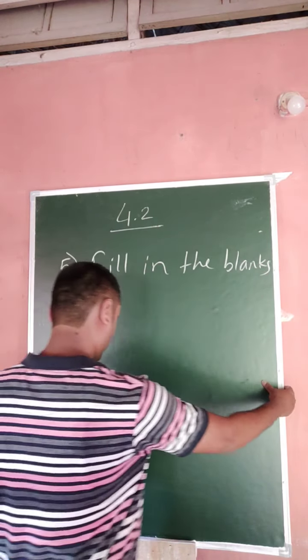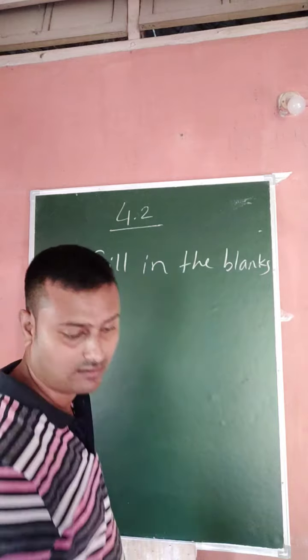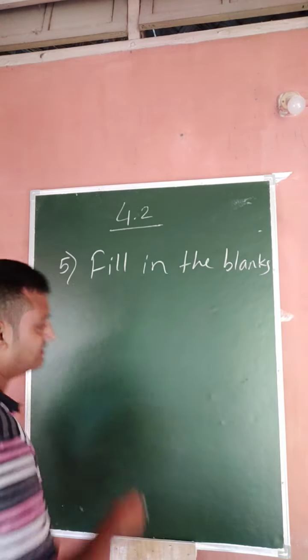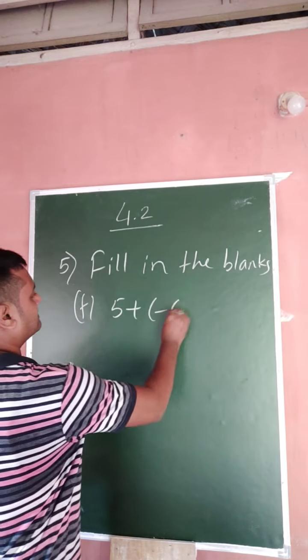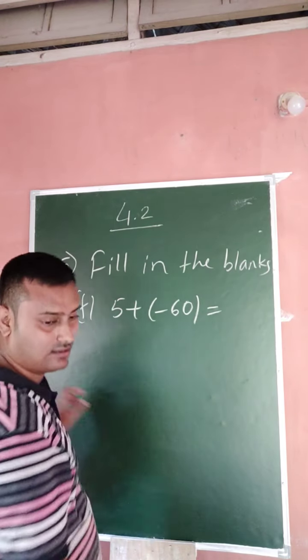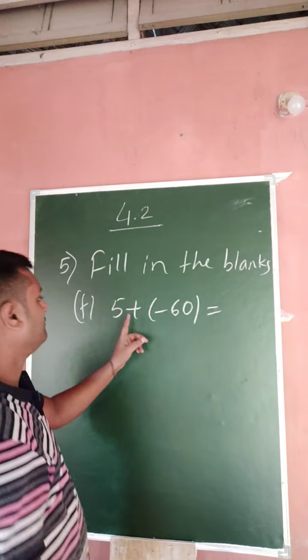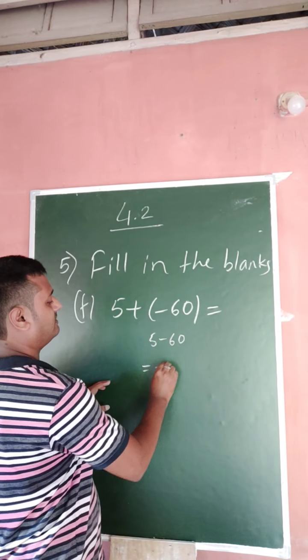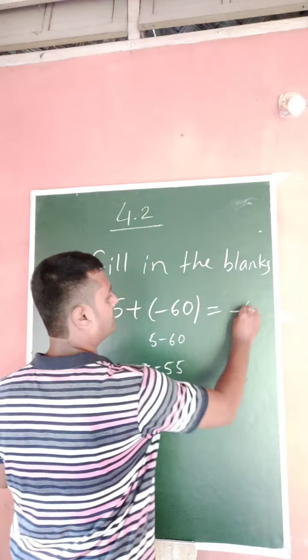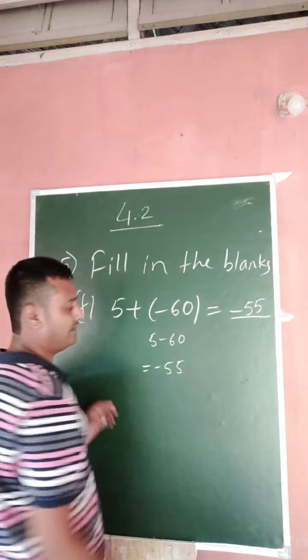So now question number F: 5 plus minus 60 equals. So 5 plus minus become minus, 5 minus 60 is minus 55. So minus 55.